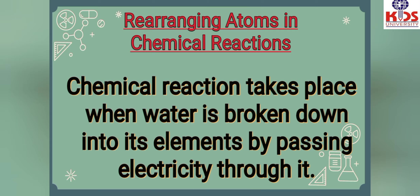The rearrangement of atoms in reactants forms new products in a chemical reaction. For example, a chemical reaction takes place when water is broken down into its elements by passing electricity through it. When we pass electricity to water, the elements of the water break apart - the water will not remain as water but will become hydrogen and oxygen.